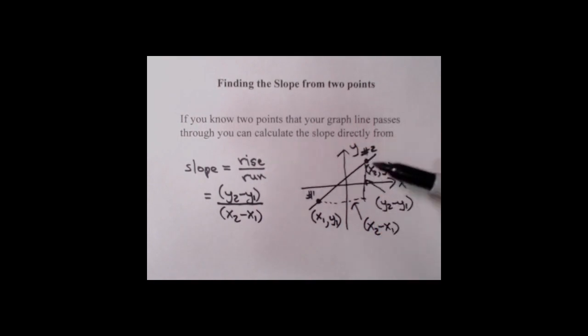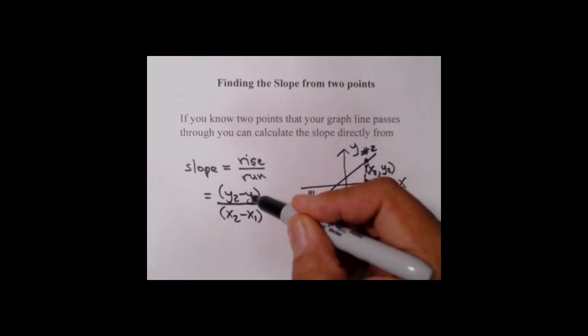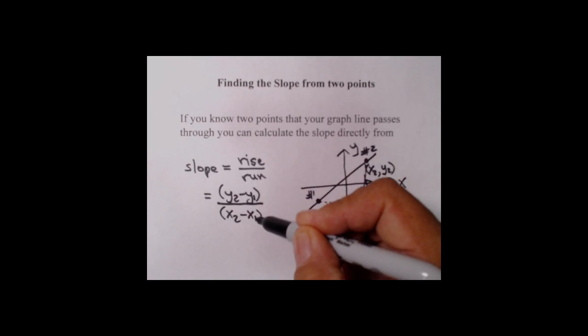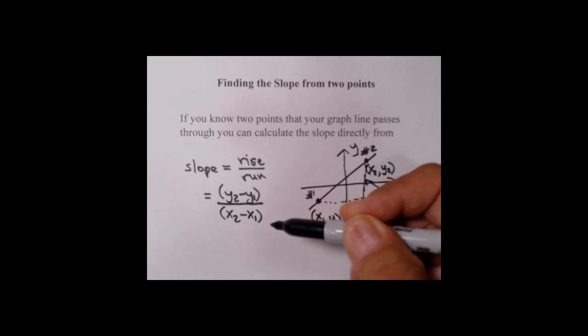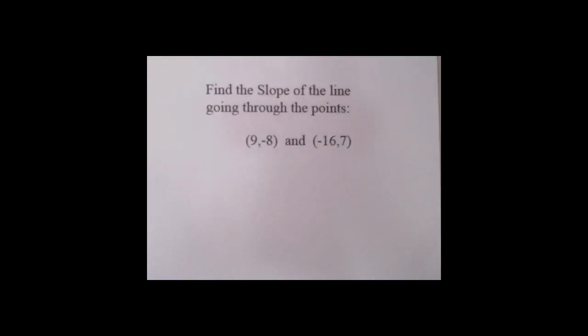Here's the relationship we're going to use. Given two points, we won't bother making the graph and drawing the triangle and doing all of that. Since we know what these points are, we can simply take the difference in the Y's divided by the difference in the X's.